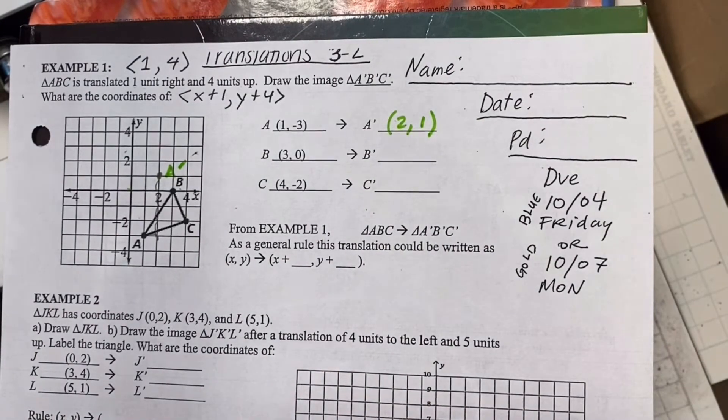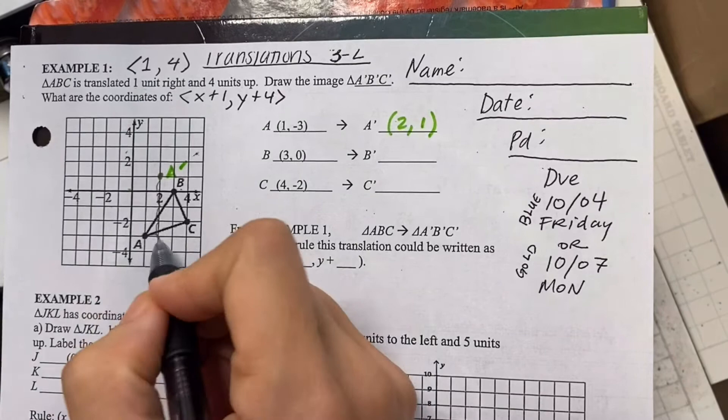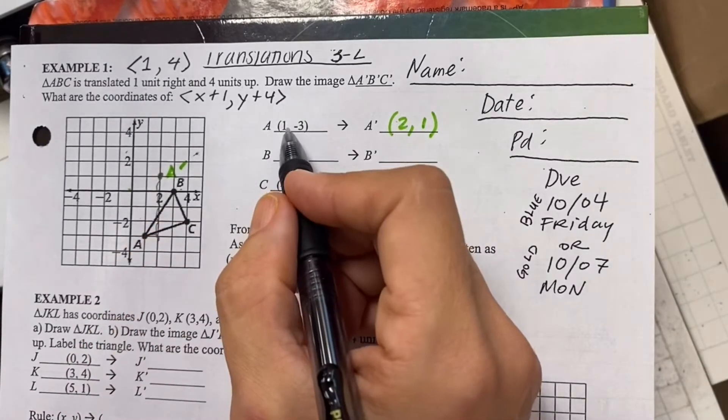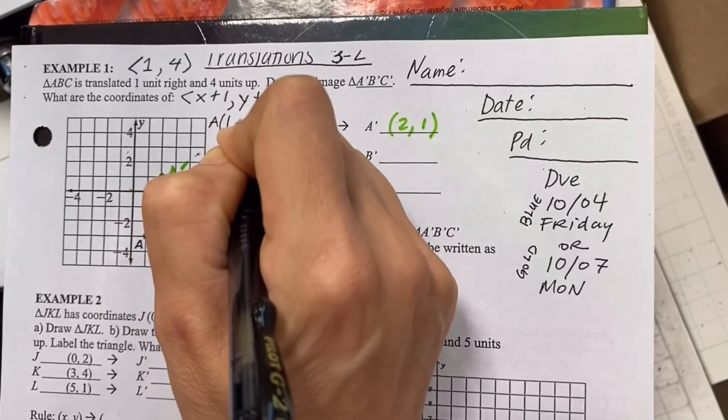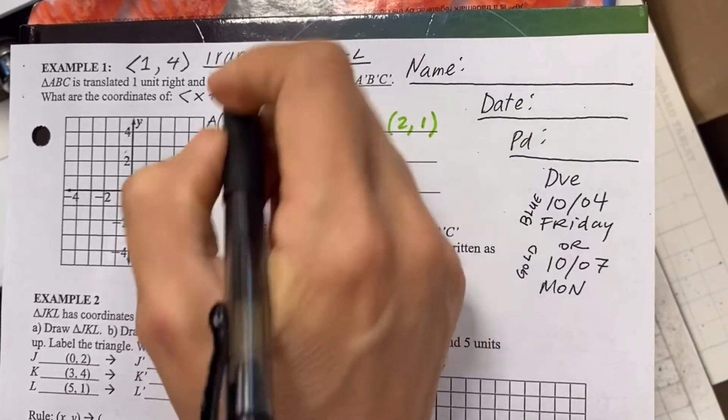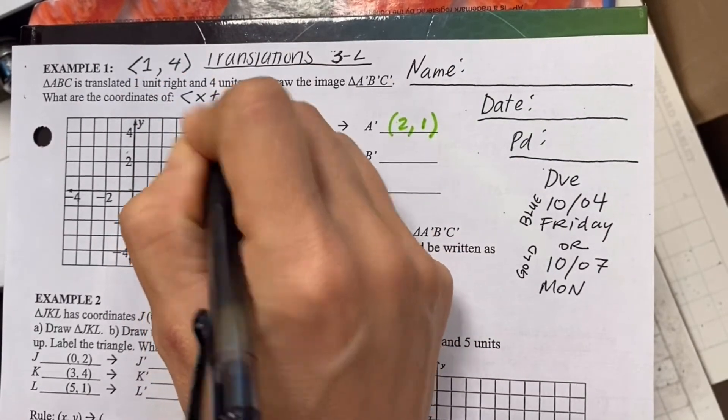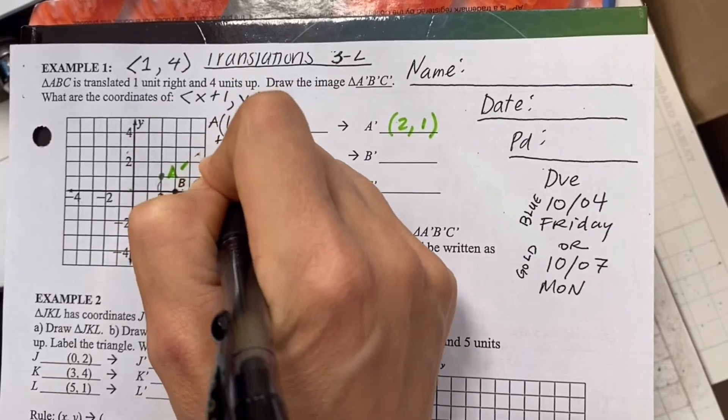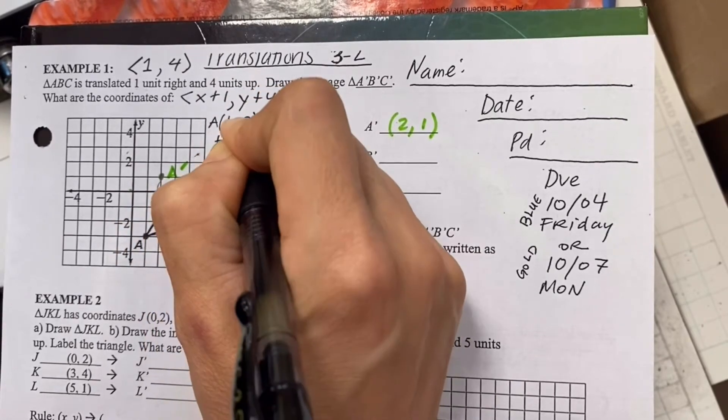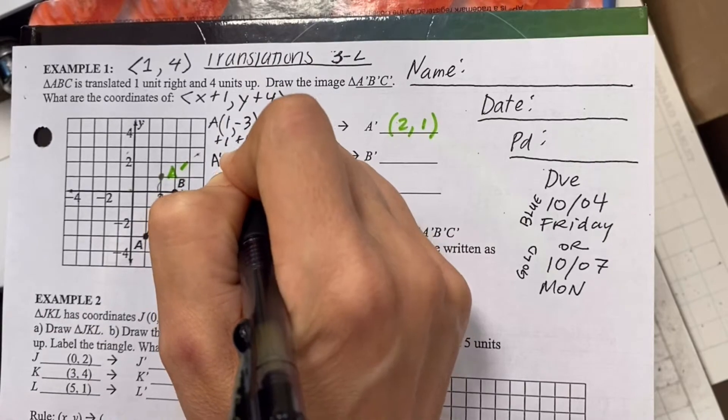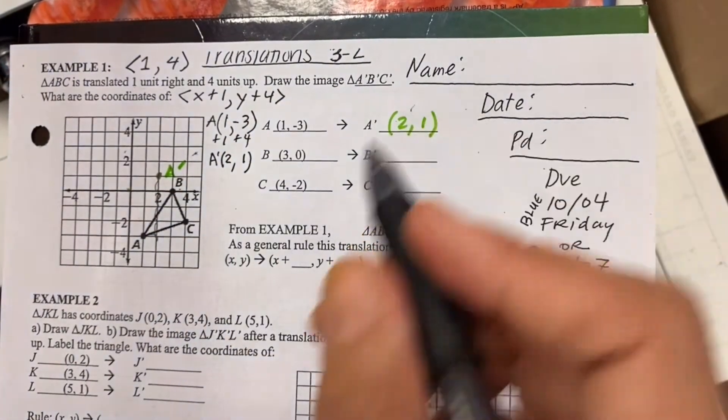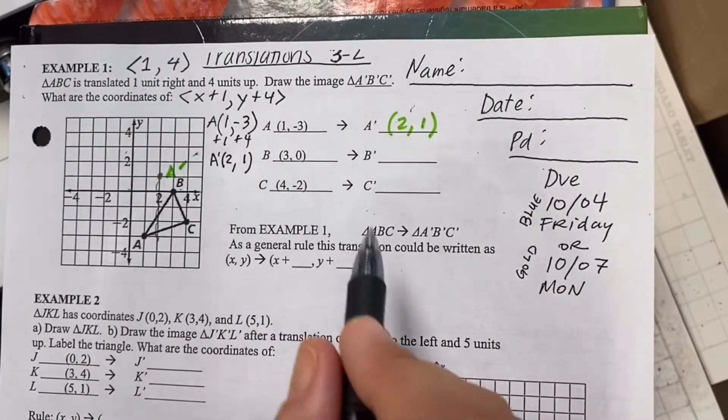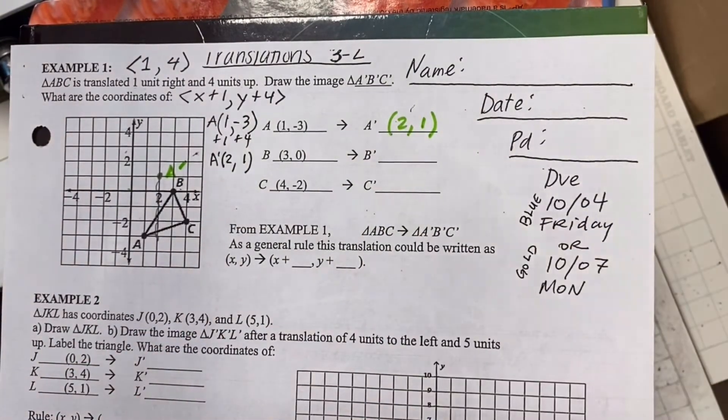Now when we translate, we could do it with math or just using our picture. So we could have also lined up our coordinates. If A is one comma negative three, then we could add one and add four. So A prime would be one plus one and negative three plus four. Look, got the same answer. So I like doing it both ways because I can double check my work.